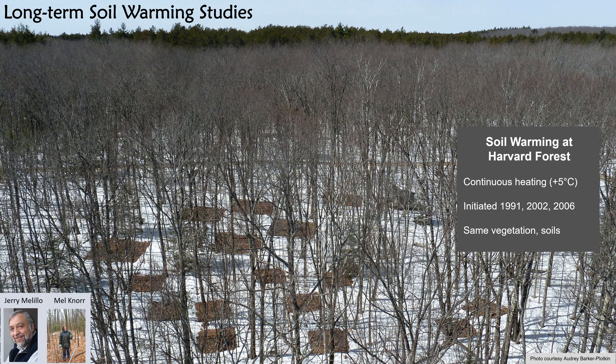The first of these is a set of long-term chronic soil warming experiments initiated at different time points, which means they in some ways represent a chrono-sequence, because we have plots that have been heated in the same way on the same soil type under similar vegetation. All of these plots are heated continuously to 5 degrees C above ambient with underground heating cables. Jerry Melillo, who recently retired, initiated the first two experiments in 1991 and 2002, and my group started a third experiment in 2006.